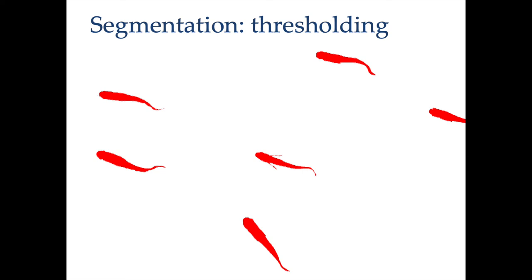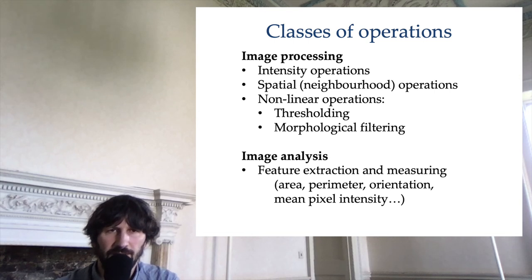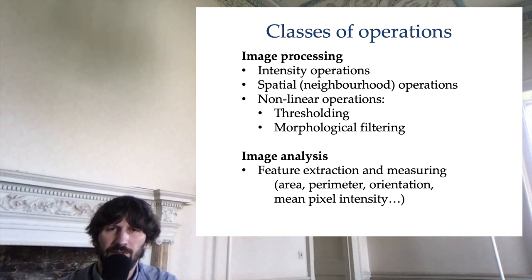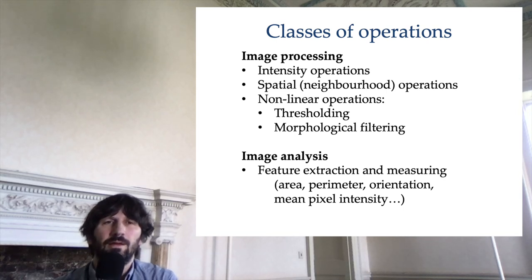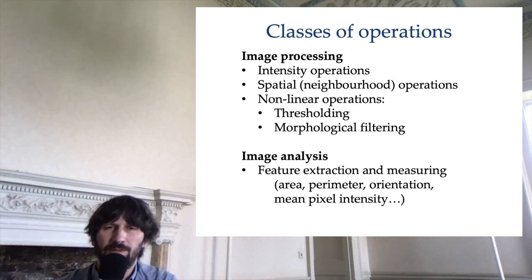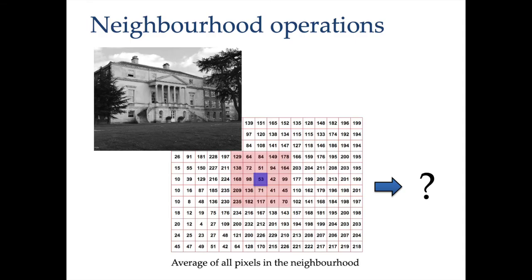Thresholding is one of the simplest methods to segment an image. The second class of operations are neighborhood operations. Unlike intensity operations which involve each pixel independently, neighborhood operations involve a pixel and its neighbors — a neighborhood that can be defined in different ways. One example is blurring, which replaces the value of a pixel with the average value of all its neighbors within a certain range or distance. Neighborhood operations are quite important because they are often used as intermediate steps in image analysis and computer vision.